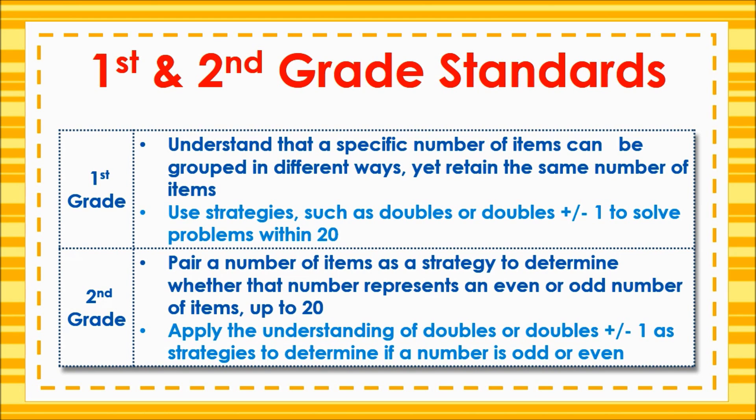It is important for students to be able to identify even and odd numbers to use for patterns and to judge reasonableness when adding numbers. For example, when adding 97 and 76, I know that my answer will be an odd number, so if I add and get an even number, I know that I've made a mistake. The idea of equal groups is also a building block for multiplying or dividing by two in later grades.